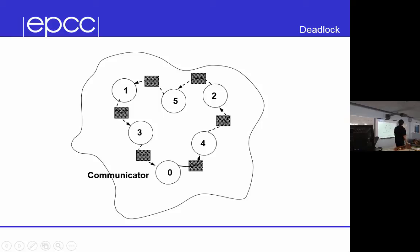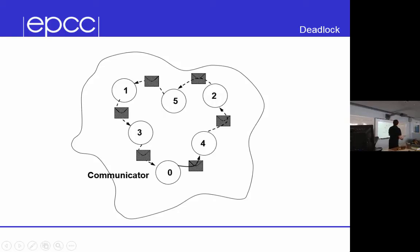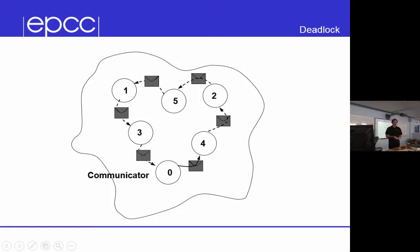You might say you can do this with synchronous send if you don't have periodic boundary conditions — for example, if the last processor didn't send the message. Then it would receive from one, and you'd break the deadlock. But the problem there is you want these communications to all happen at once. If you do this with synchronous send without periodic boundary conditions it won't deadlock, but it will be incredibly slow because there'll be a ripple effect — not what you want.